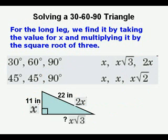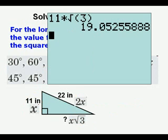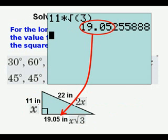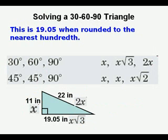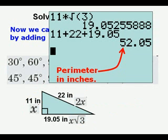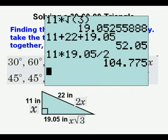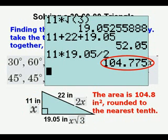For the long leg, we find it by taking the value for x and multiplying it by the square root of 3. And here we do that in our calculator and we get 19.05. When rounded to the nearest hundredth, we can find the perimeter by adding 11, 22, and 19.05. So that's our perimeter of 52.05. Finding the area is now almost as easy. We take the two legs, multiply them together and divide by 2. So we get an area of 104.8 rounded to the nearest tenth.